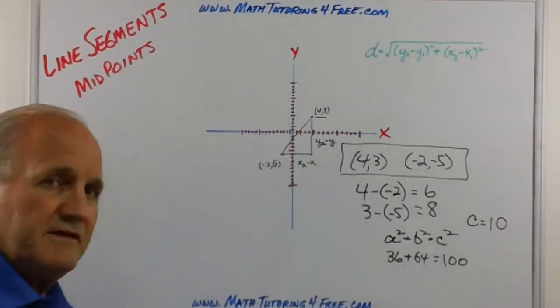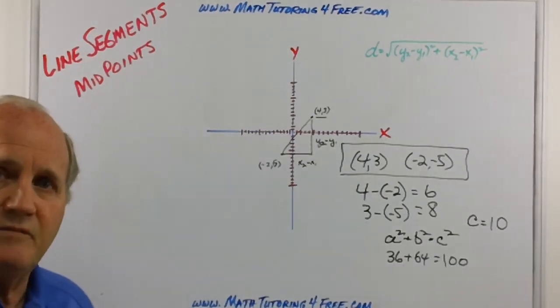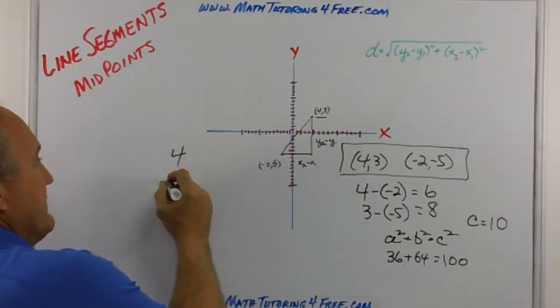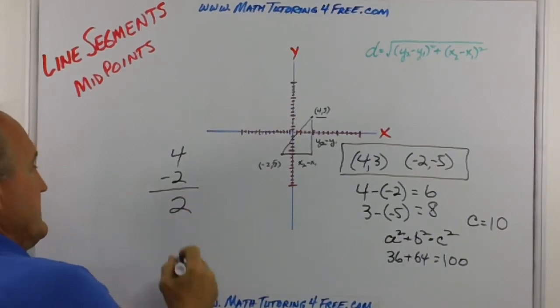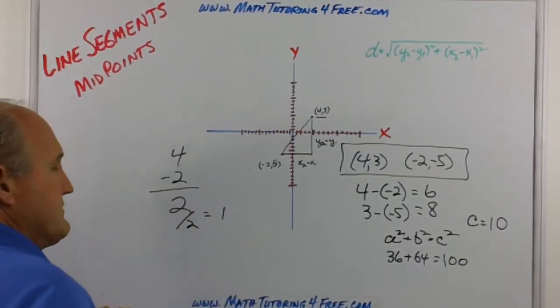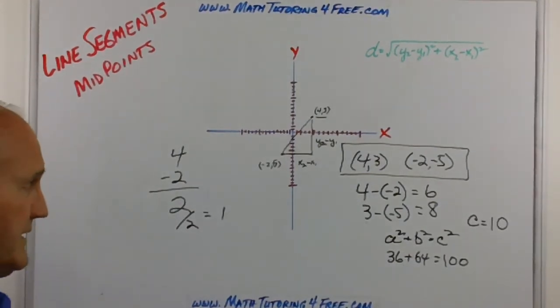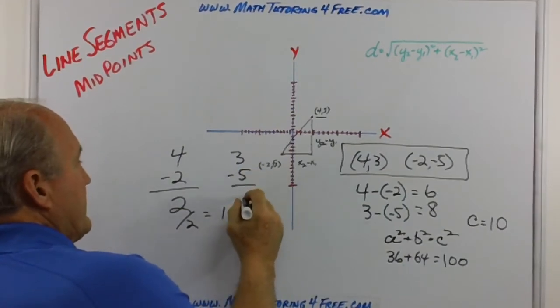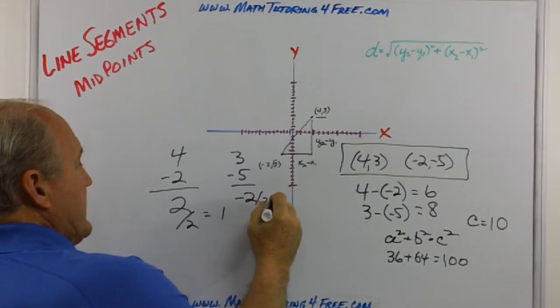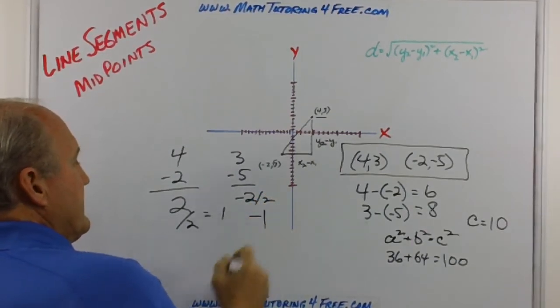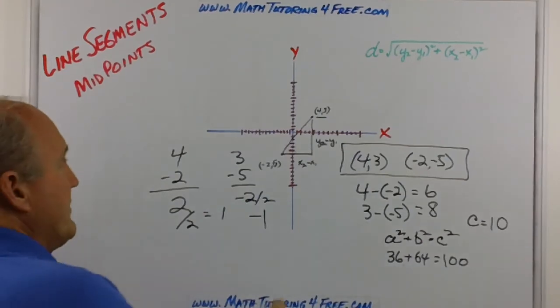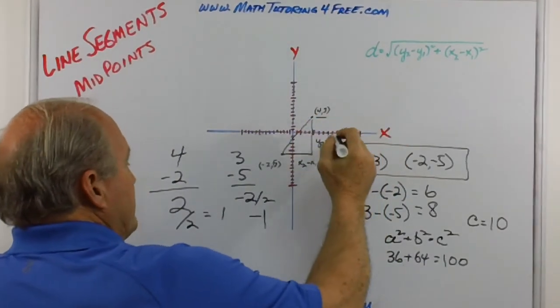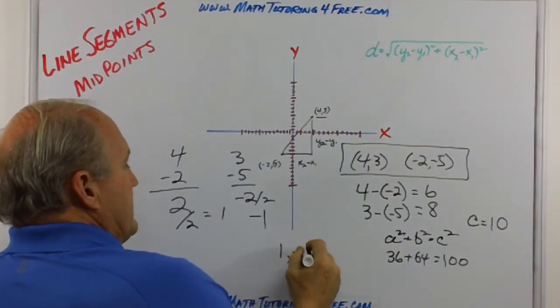So what we'll do is just take the average of the x's and the average of the y's. That will be our midpoint. When we find the average of two items, we add the two items. 4 and -2 total is 2, we divide it by 2, so the x coordinate for the midpoint is going to be 1. The y values, 3 minus 5, we add those we get a -2, divide that by 2, and our y value is -1. So the midpoint here would be, the coordinates would be (1,-1).